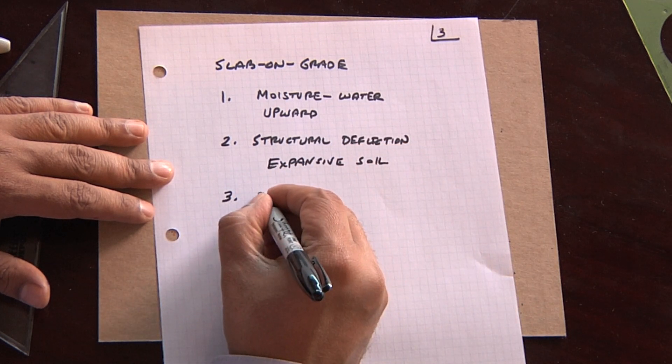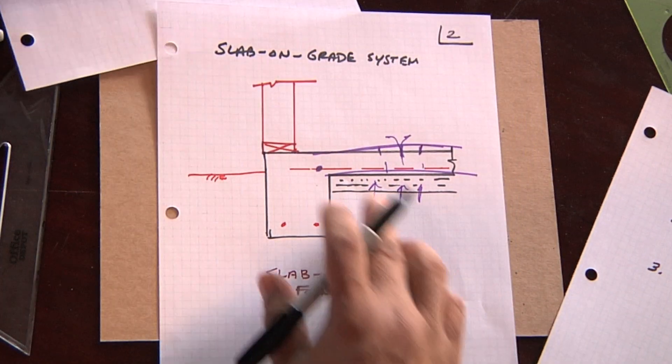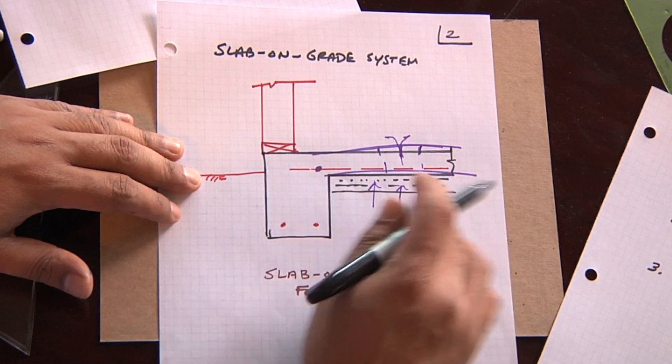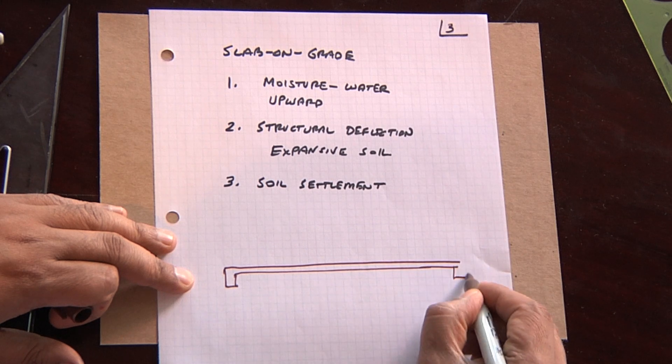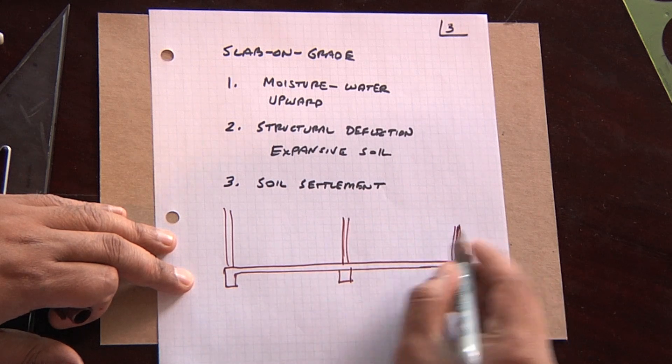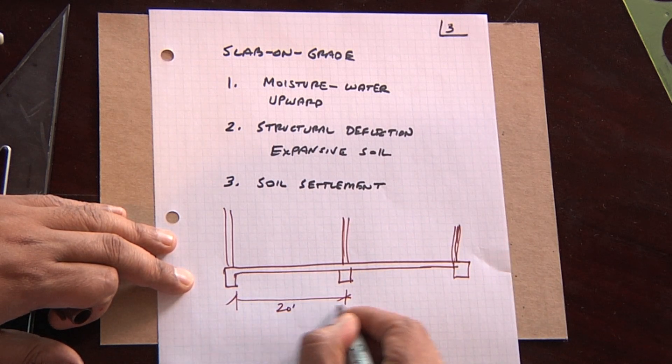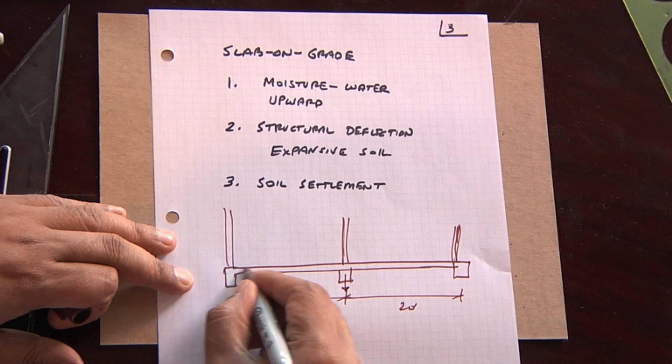And then you have soil settlement, which can occur for a multitude of reasons. And because, with a slab on grade system being so sensitive to any type of vertical movement, let's draw a quick sketch of that to explain what I mean. If we look at a slab on grade system in a typical building, you may have an interior footing in here, and let's say you have your building constructed here. And we'll just throw some dimensions on here. Let's say that this is 20 feet. This is 20 feet.